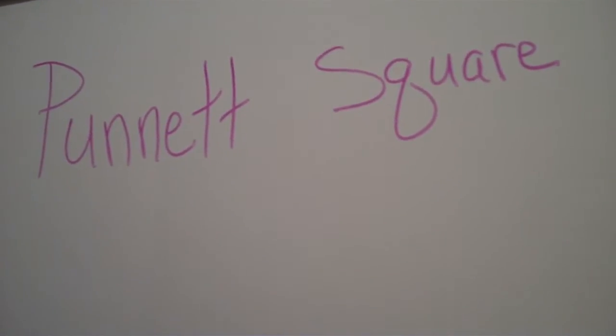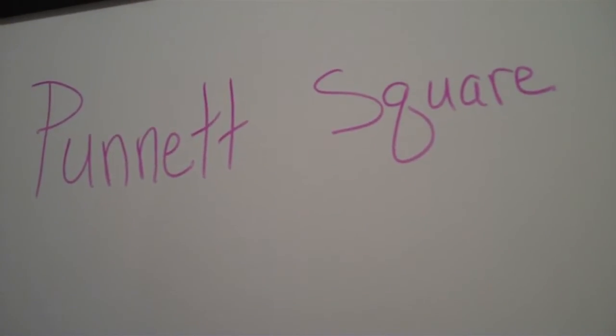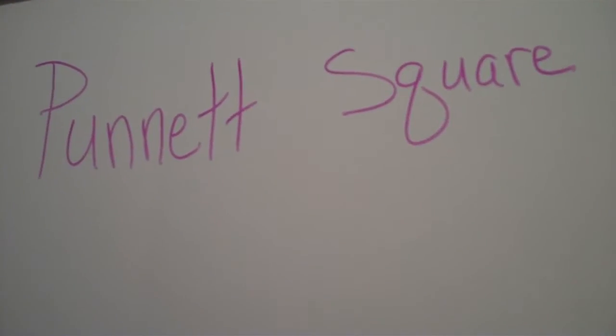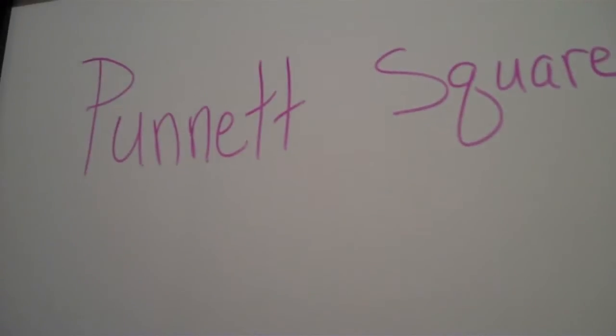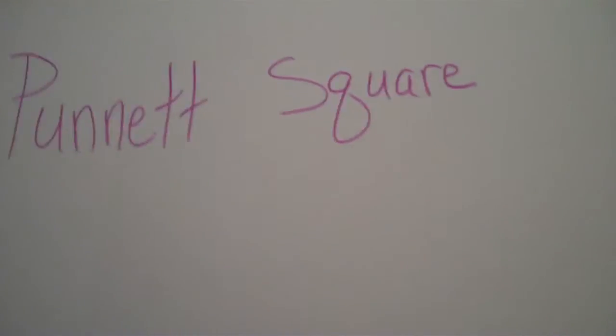Lavender Hill Loft. Punnett squares are a tool that geneticists use to predict the possible gene combinations of livestock, poultry, plants, you name it. This is how they do it.